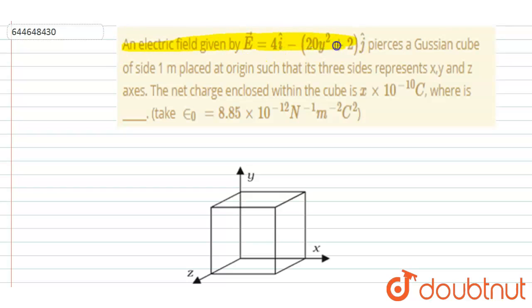by E vector equals 4i cap minus 20y^2 j cap. If I see the variable component, this minus 20y^2, it is along j cap, so it is along this direction and it varies with y.